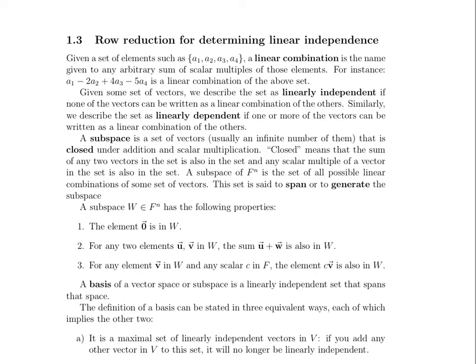Now let's get more specific about our set. When we're talking about a set of vectors, which is what we care about in this particular unit in linear algebra, we describe this set of vectors as linearly independent if none of the vectors can be written as a linear combination of the others. So I wouldn't be able to write something like A3 equals A1 plus 2A2. To say that a set is linearly independent means I can't write any of the vectors in the set in terms of the other vectors as a linear combination.